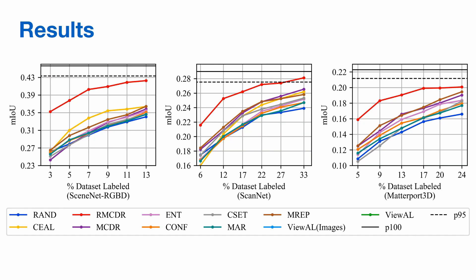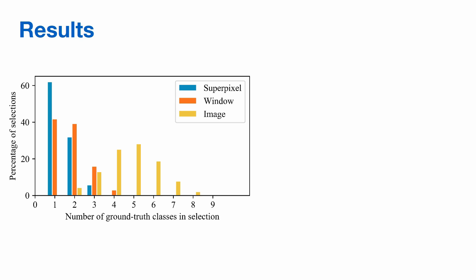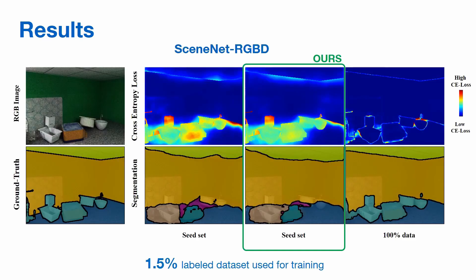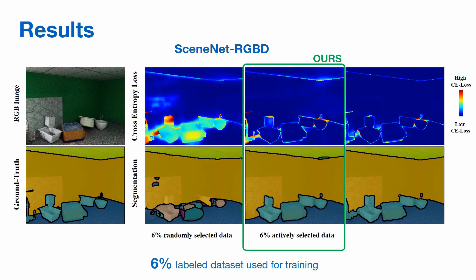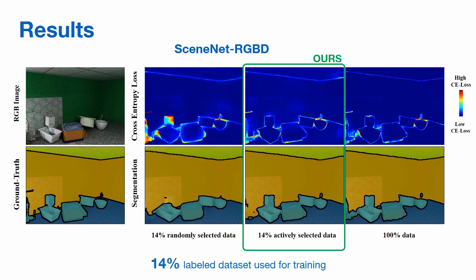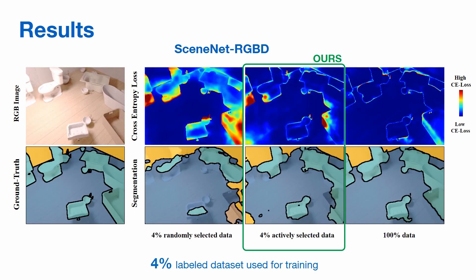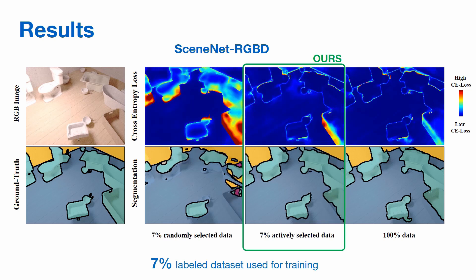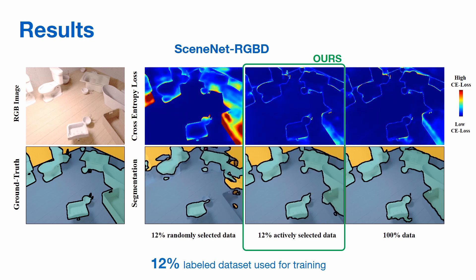We evaluate our method against 9 other popular active learning methods on the CNET-RGBD, ScanNet, and Matterport3D datasets. Our method is able to outperform all of these methods, requiring less labeled data to achieve the same performance. Furthermore, our method not only reduces the amount of data to be labeled, but also the required labeling effort. Our method achieves performance comparable to training with a full dataset using only a small fraction of labeled data.